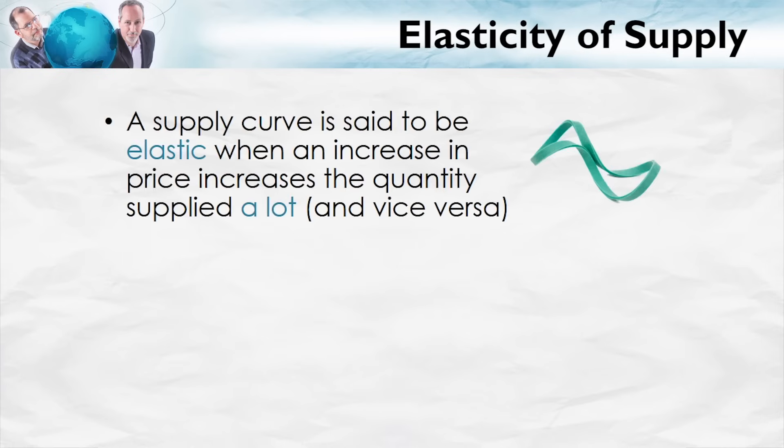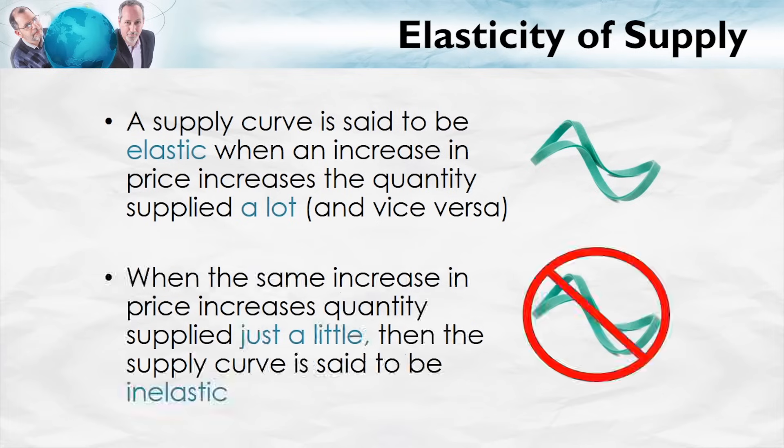A supply curve is said to be elastic when an increase in price increases the quantity supplied by a lot. When a decrease in price decreases the quantity supplied by a lot, we also say that the supply curve is elastic. So when the quantity supplied is very responsive to the price, the supply curve is elastic.